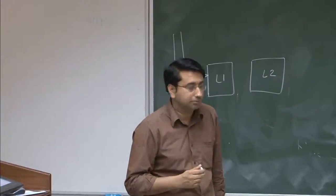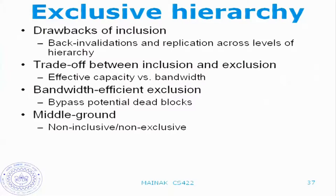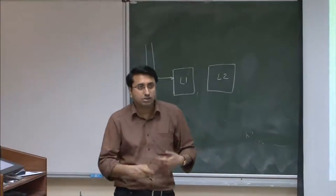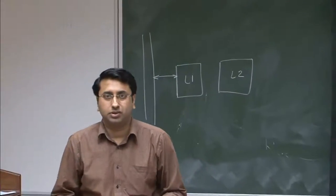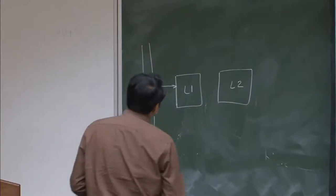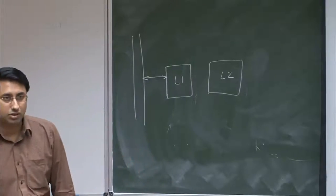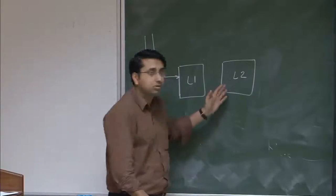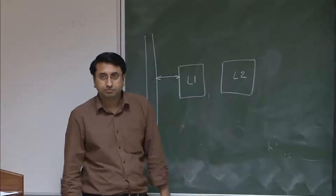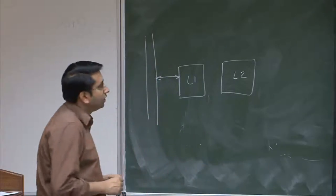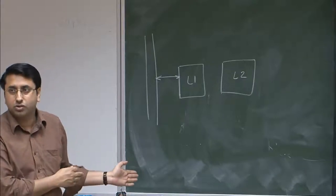What may happen is that this block may eventually become the LRU block in the L2 set, because there is no access to L2 cache. So it may become the least recently used, and eventually the L2 cache may evict the block. When it evicts the block, to maintain inclusion, it will also invalidate the block from L1, which may actually hurt performance because this is a very hot block. These are called back invalidations — invalidations triggered by L2 eviction.